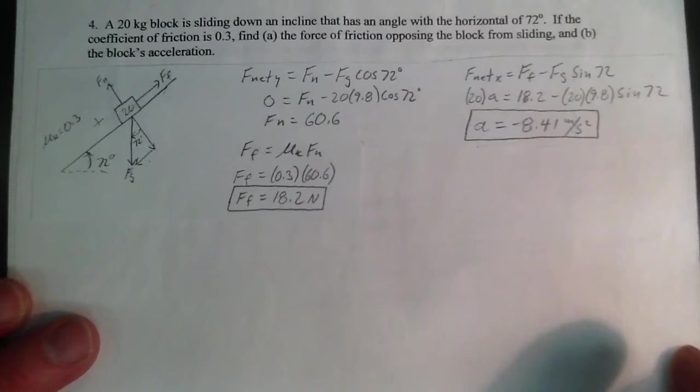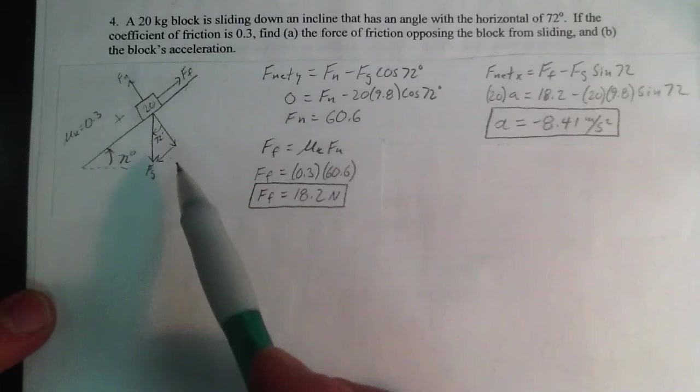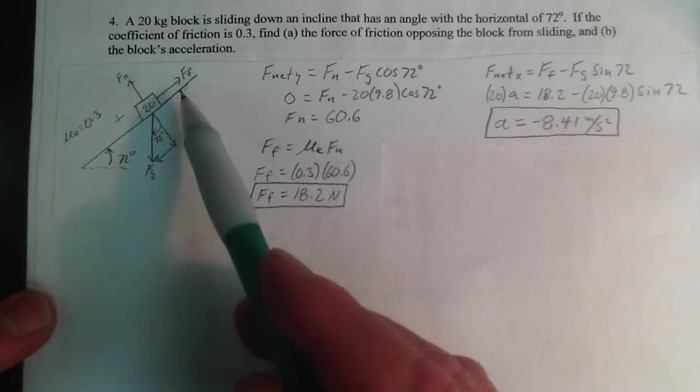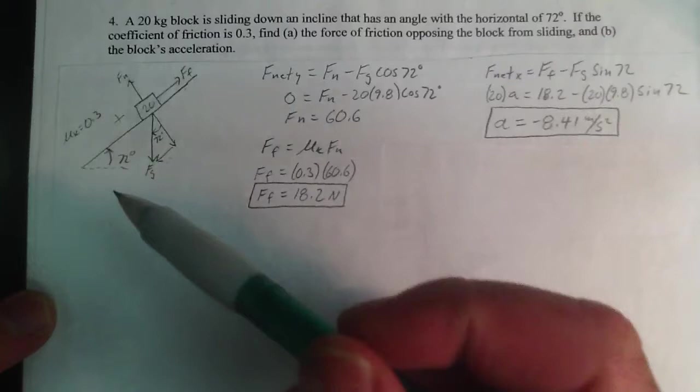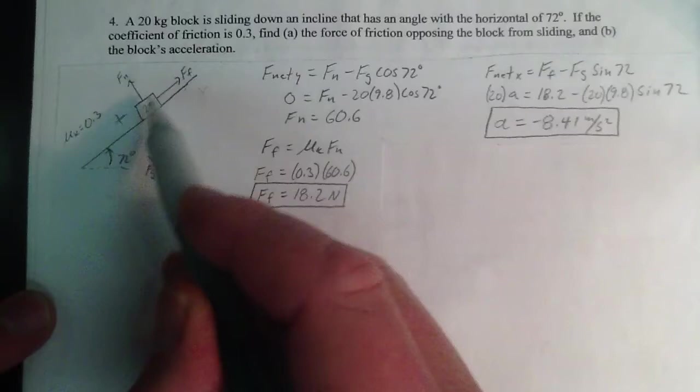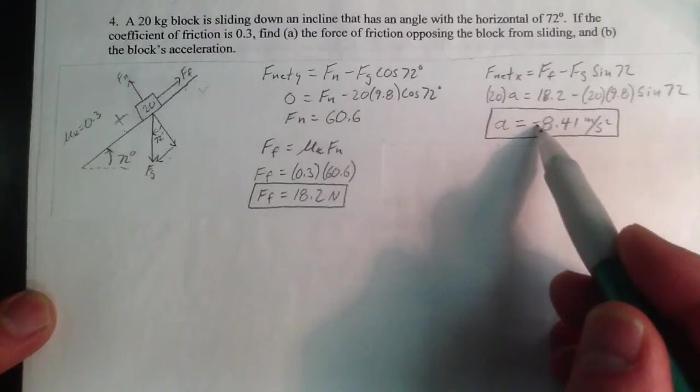This is absolutely no different. This vector is smaller than this vector. Therefore, unless there's another outside force applied acting on it, it's going to slide this way. Again, back in the old days, I called this positive. It's much better to call this positive because it's going down an incline. Call the direction of motion positive, and then that way you won't get these little squirrely things.